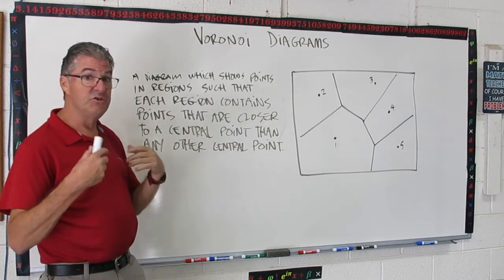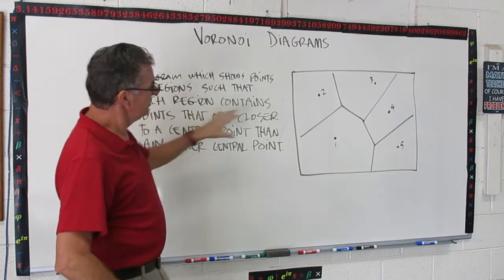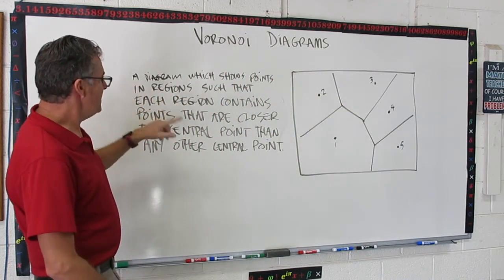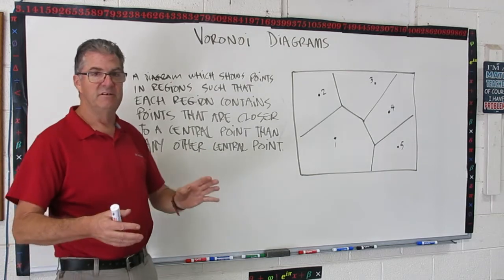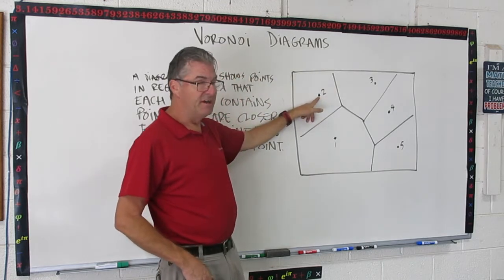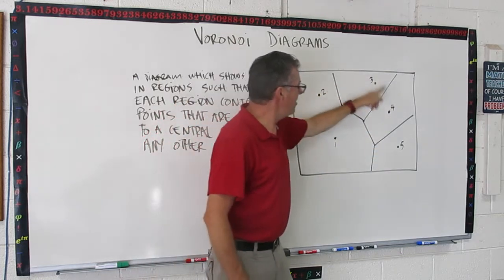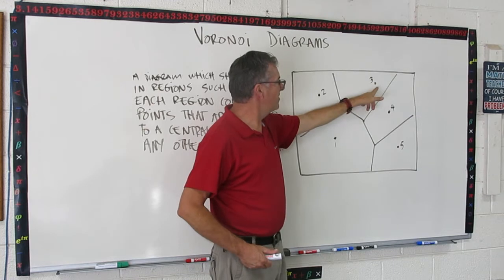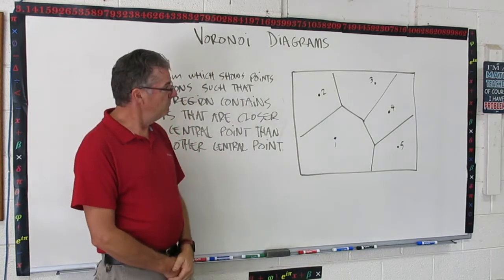I'm going to go ahead and read this off to you and then we'll do kind of a user-friendly description. So, a Voronoi diagram is a diagram that shows points in regions. So that's a region, that's a region, that's a region. It shows points in regions such that each region contains the points that are closer to a central point than any other central point. So let me break that down. What it means is that all the points in this region are closer to two than any other point on the diagram.